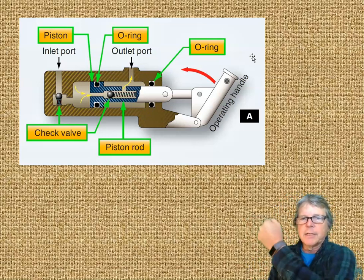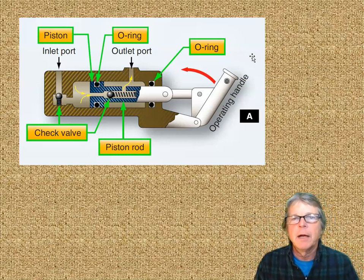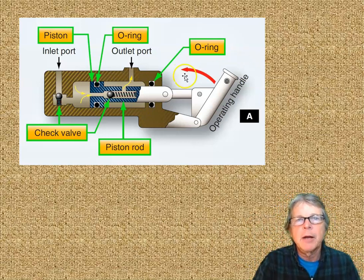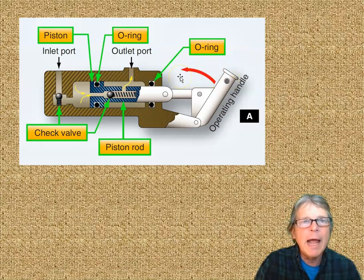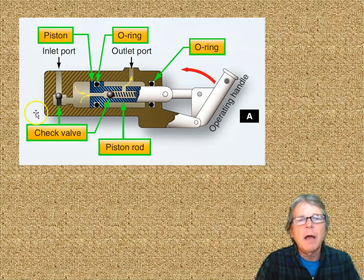What happens here is we have an inlet port and an outlet port, and we have this thing called a check valve. Now, a check valve allows flow only in one direction.